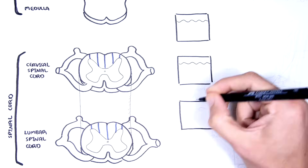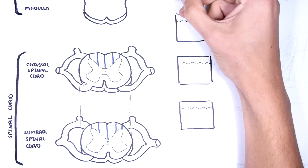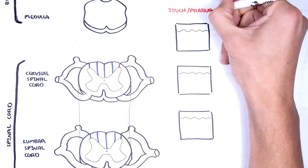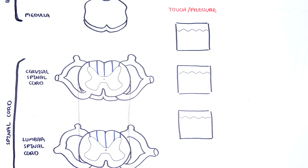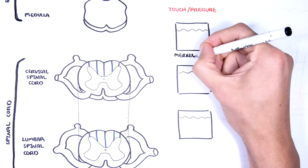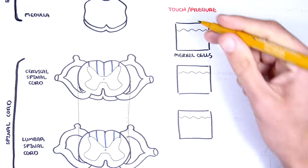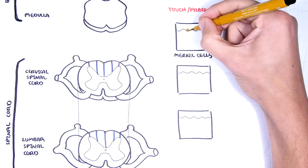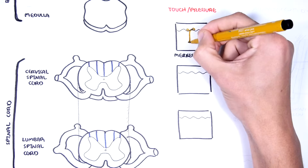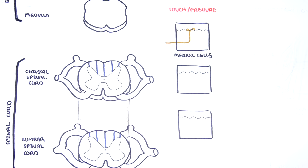The cutaneous receptors — the skin receptors for touch, pressure, and vibration — are the mechanoreceptors. Mechanoreceptors are found in a number of cells. These include Merkel cells, which carry touch and pressure information from the superficial skin.